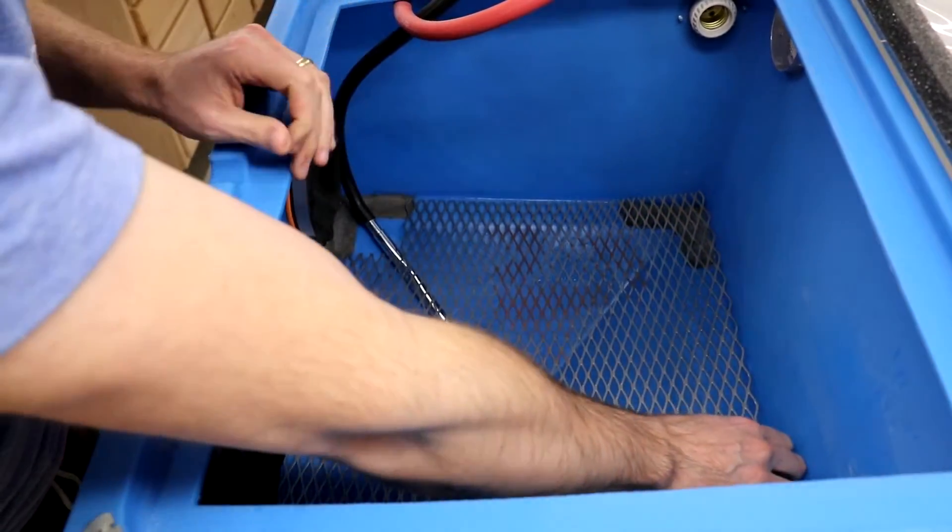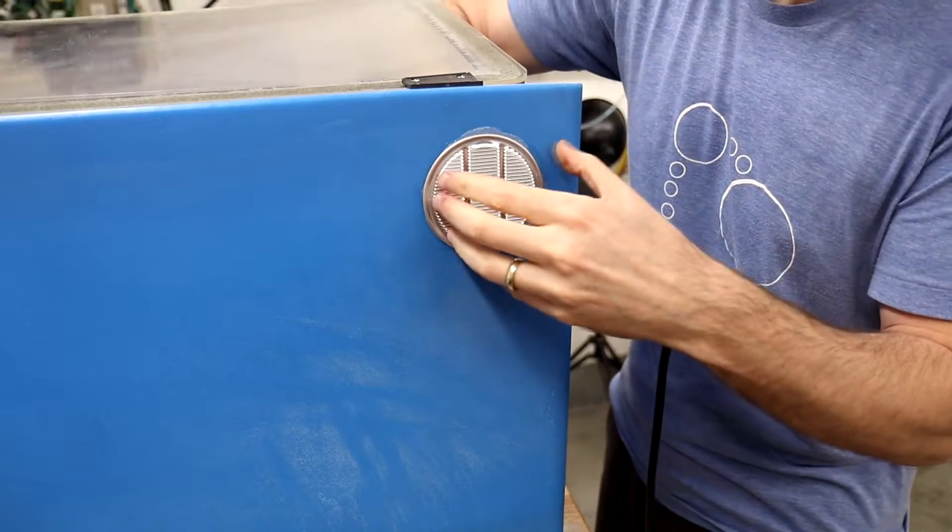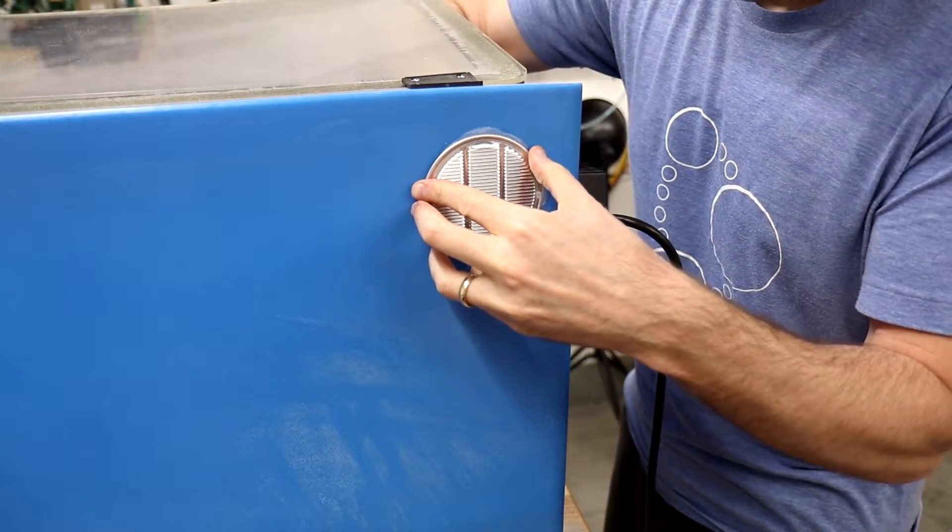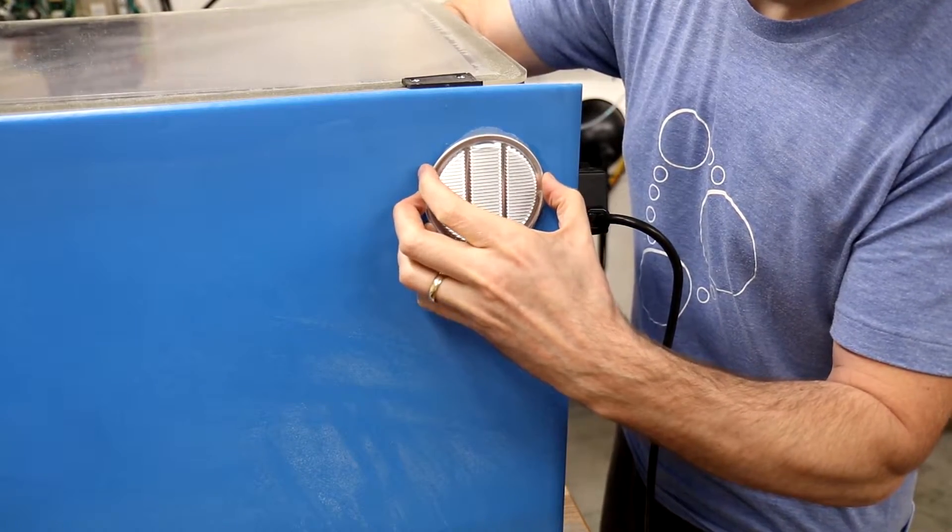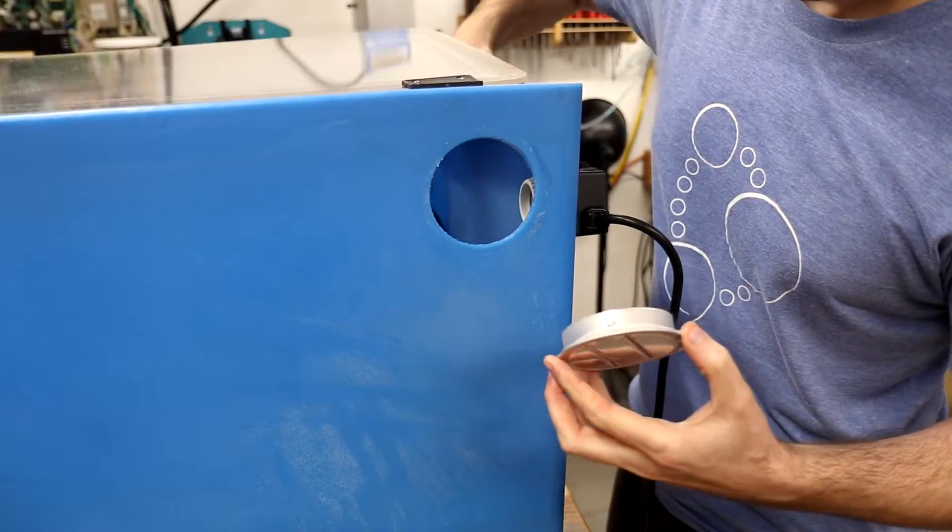Without that extra weight, the blaster has a tendency to move around. The next thing we'll do is improve the ventilation system, first by removing this rear grating. We'll use the rear larger hole for attaching the vacuum and the side smaller hole for the air inlet.